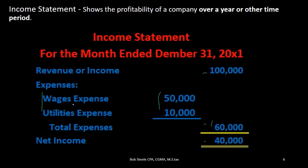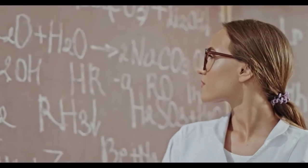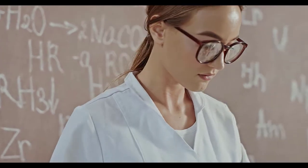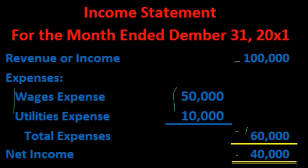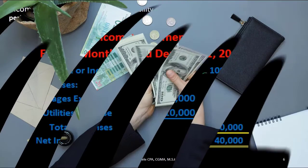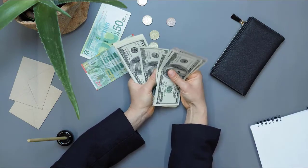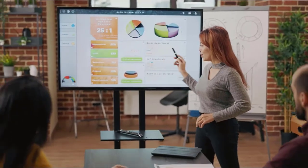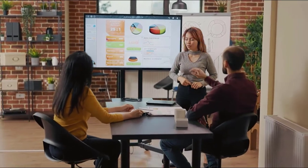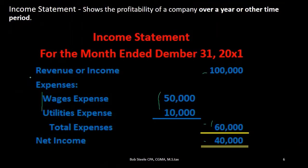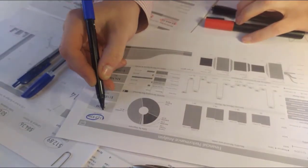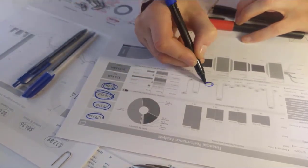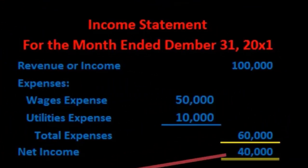When looking at the income statement, we don't directly see assets, liabilities, or equity. So the question is: how is the income statement related to the double entry accounting system? Is it just tacked on as extra information, or is it part of the accounting equation and balance sheet? The answer is that the income statement is part of the equity section — it is not separate from the accounting equation.